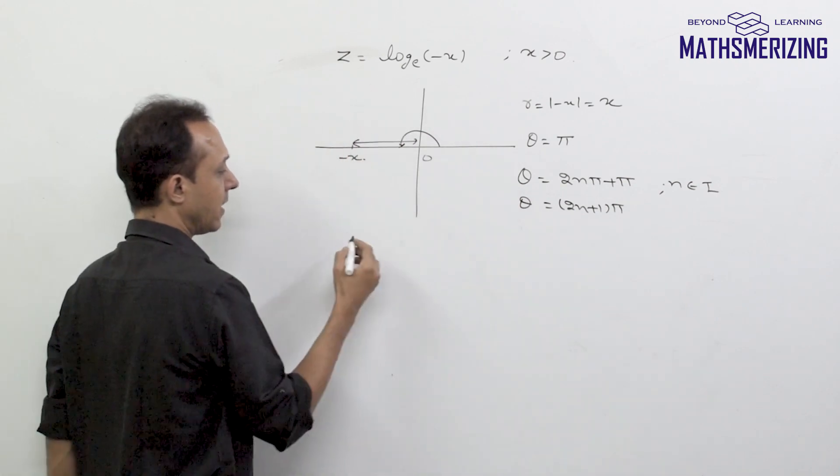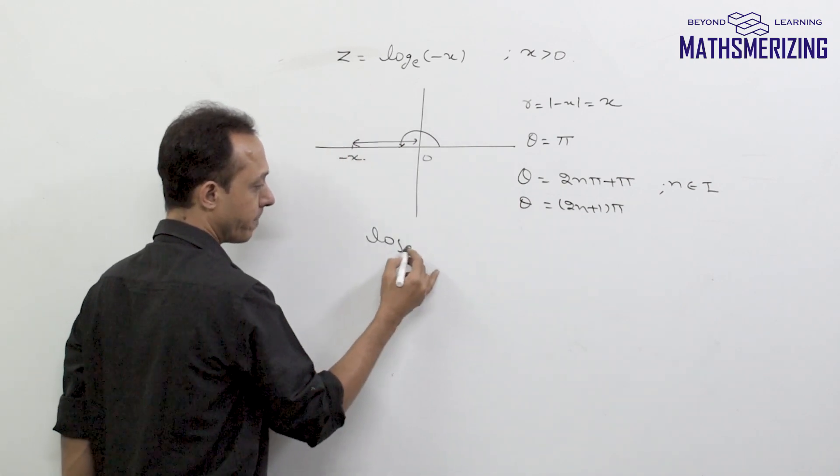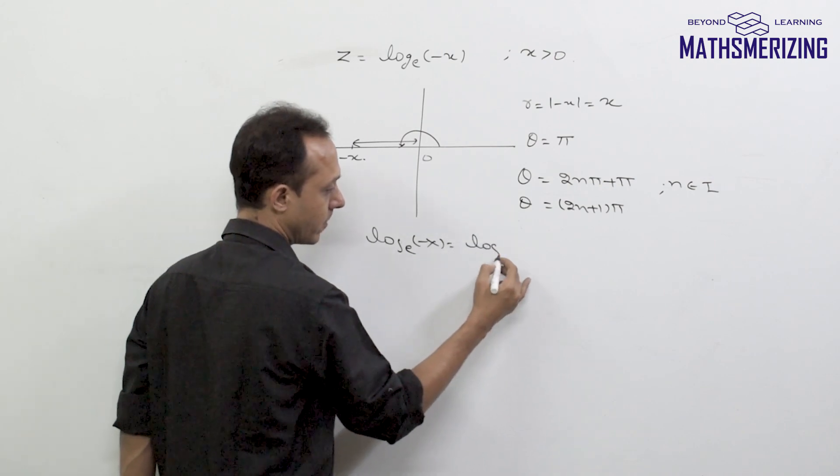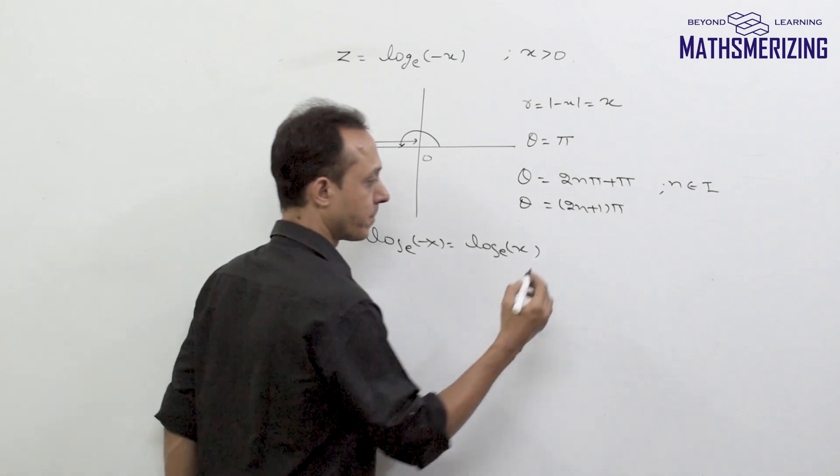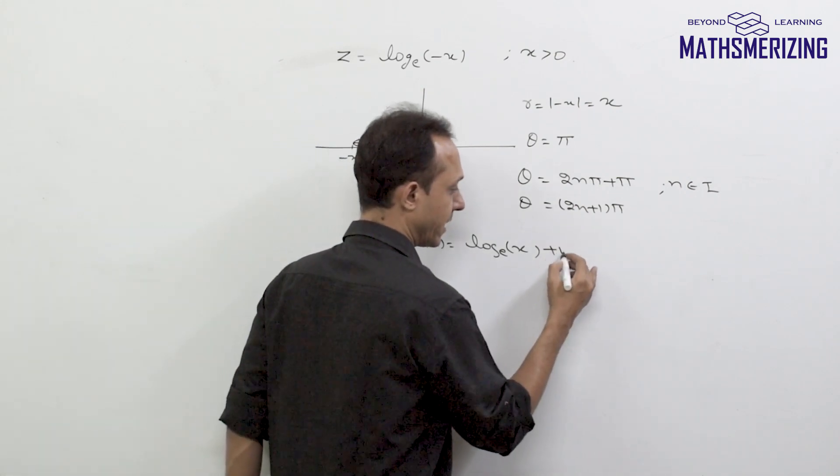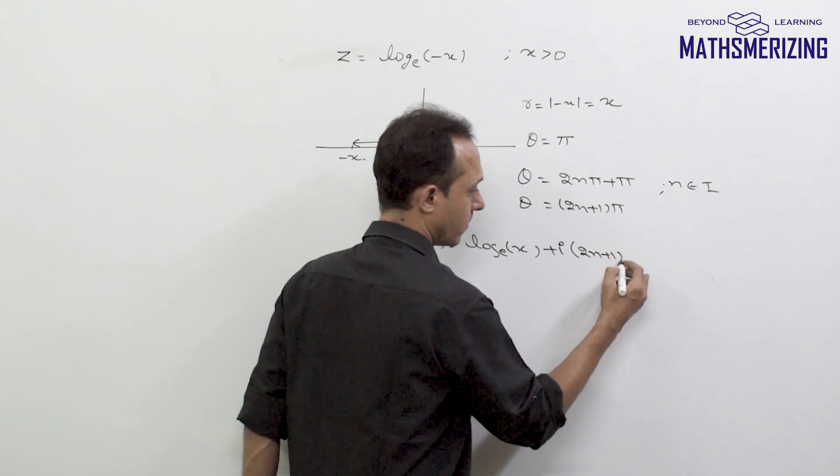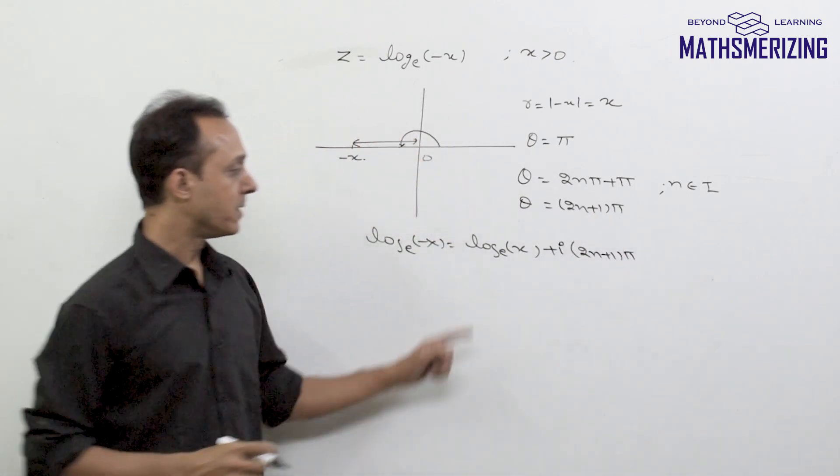So either I can use the formula directly now. So either I'll say this is log r and r in this case is simply x and then plus i*(2n*pi + theta).